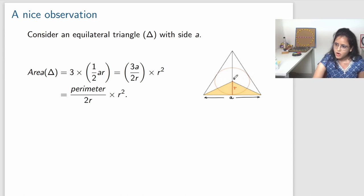And what is 3A? 3A is actually the perimeter of the triangle. So the area of a triangle is perimeter divided by 2R. 2R is this, so R is the distance of C from the middle point of a side. This is a nice observation.